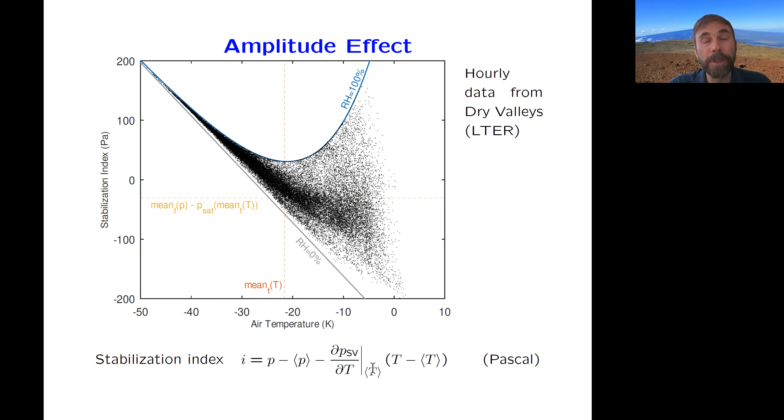So I call that a stabilization index, but it's really a partial pressure. And it tells us, so if that index is larger than zero, it means that instantaneous event contributes more than average conditions to stabilization of the ice table. And a negative index says it will cause loss of the ice. Now it doesn't mean that loss happens at that moment. It's just the contribution to a total balance.